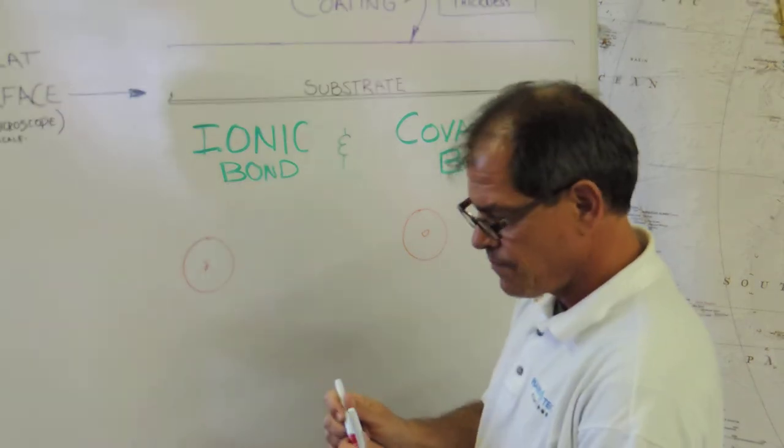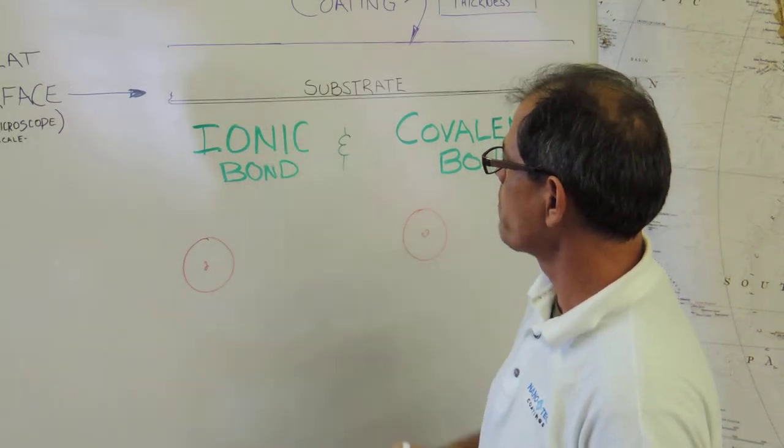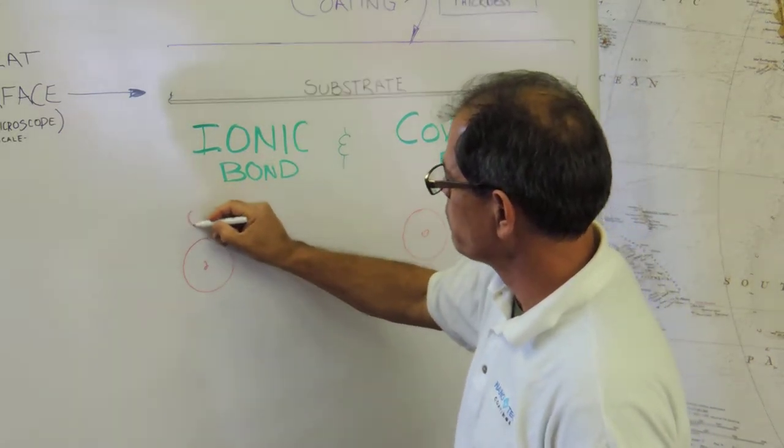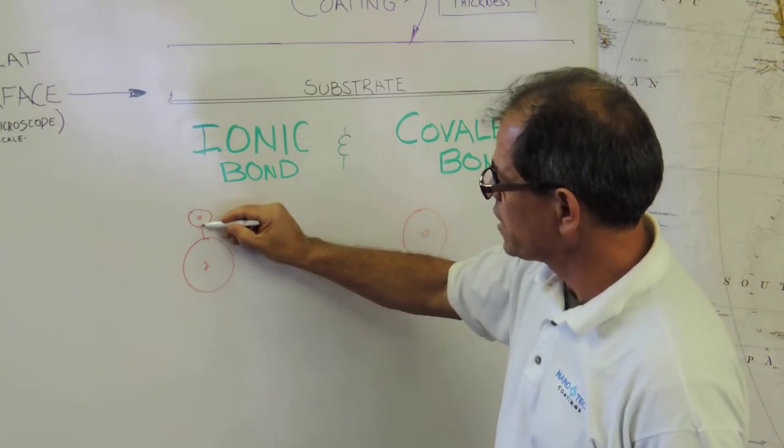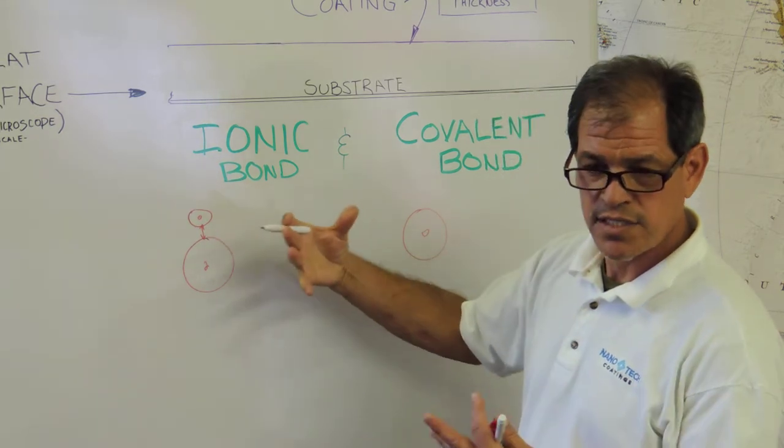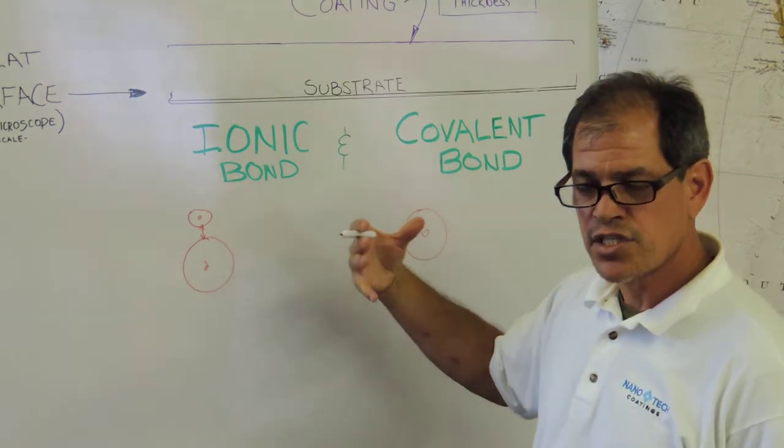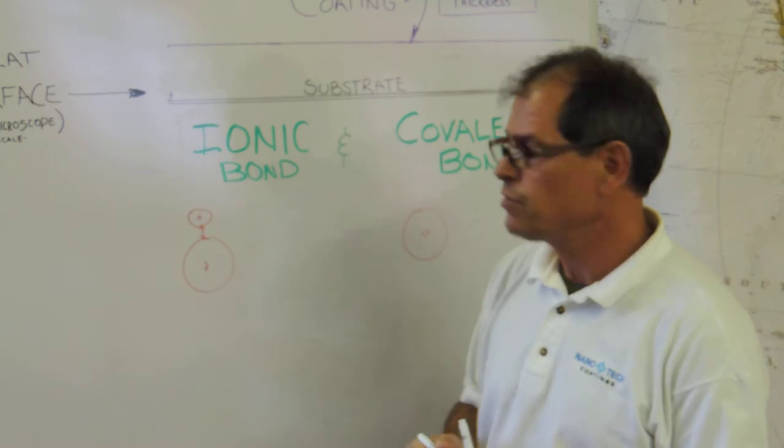Then what you do is you bring in the other coating on top of it. That would be resembled by a smaller molecule here. What's happening here, you're doing an exchange of electrons that creates somewhat of an attachment. It's an exchange of electrons rather than a shared union with them.